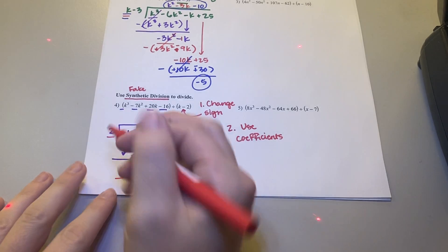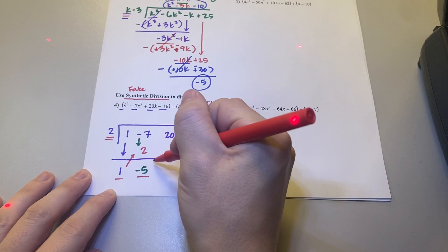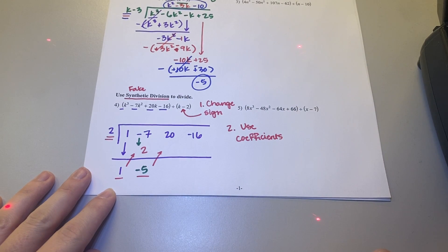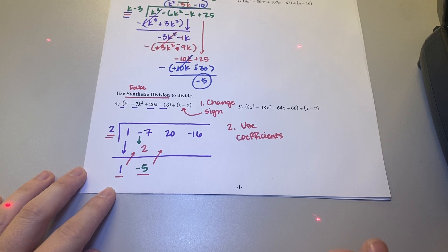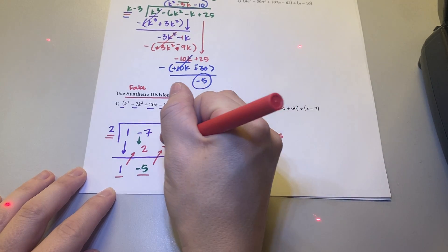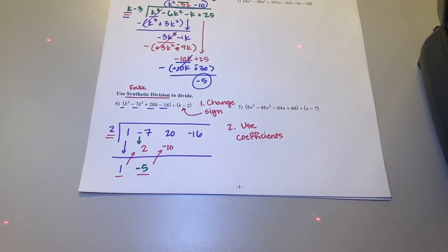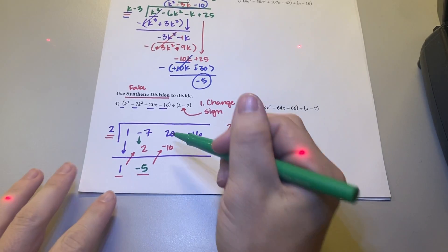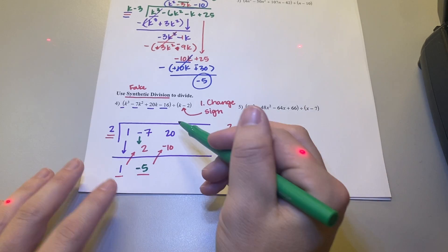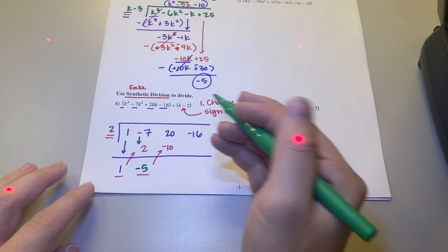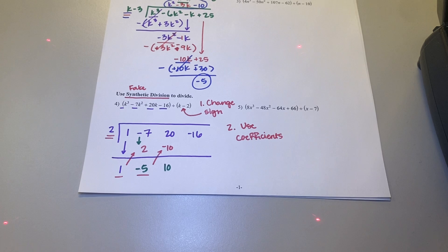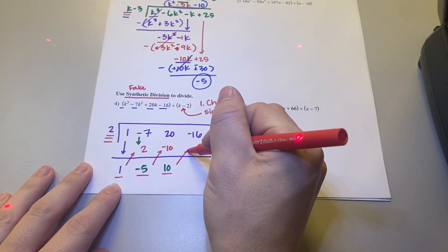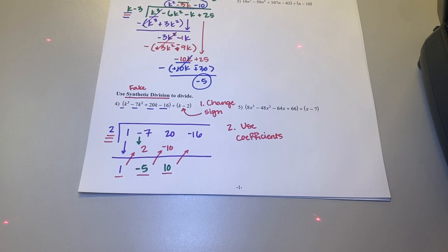Repeat the step: 2 times negative 5 — what's going to go in my next space? Negative 10. Combine these guys straight down: positive 20 minus 10. What is 20 minus 10? 10. Positive 10. Same step: 2 times 10 — what's going to go in this spot? 20.